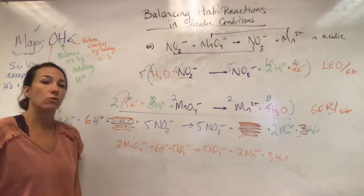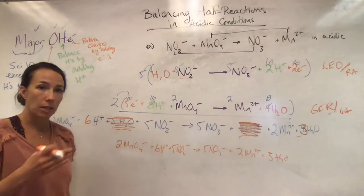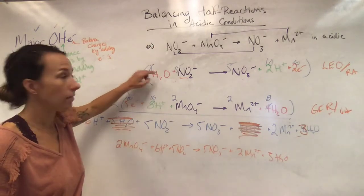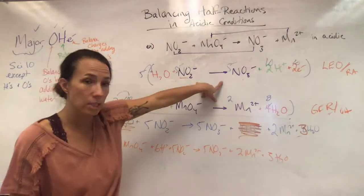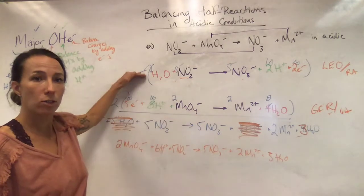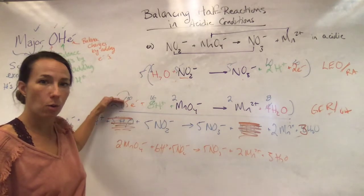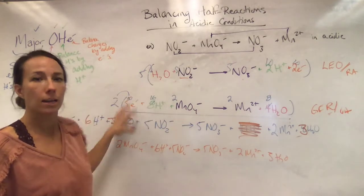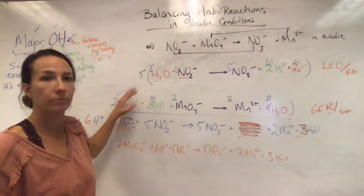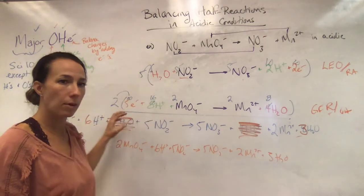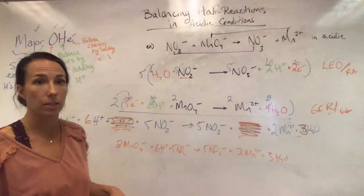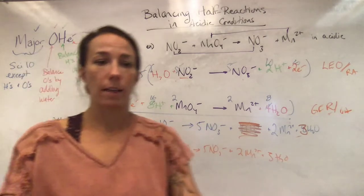Trust the process. Major OHE: take your skeleton, identify what becomes what, apply Major OHE to each half-reaction, balance electrons between the two halves, combine your reactants and products, then cancel things out that appear on both sides. That's the full procedure.